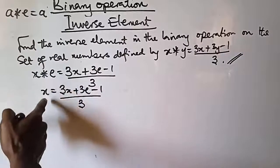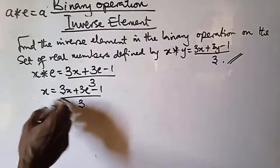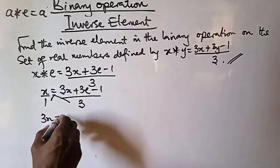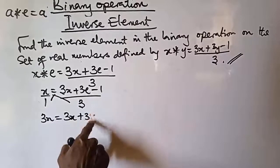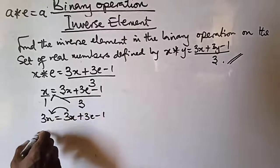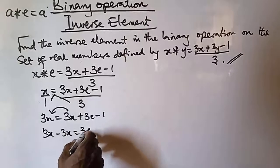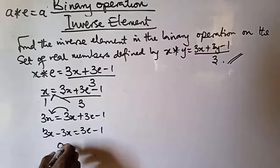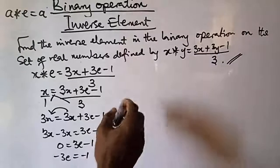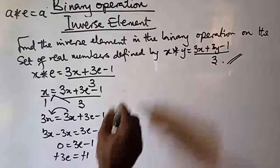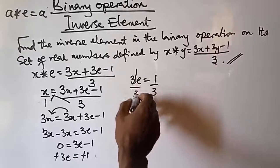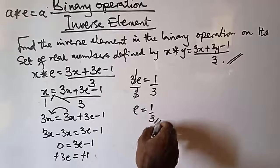Now let us cross multiply. Technically this is over one, so cross multiplying gives us 3x equals 3x plus 3e minus 1. Collecting like terms, transposing 3x: 3x minus 3x equals 3e minus 1, which gives zero equals 3e minus 1. So minus 3e equals minus 1. The minuses cancel and we are left with 3e equals 1. Dividing both sides by 3 gives us e equals one over three.